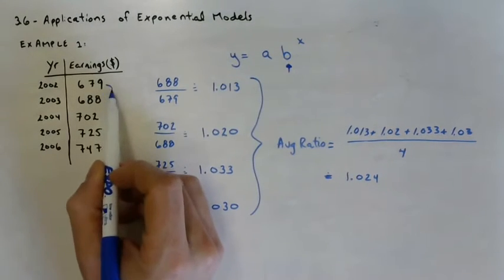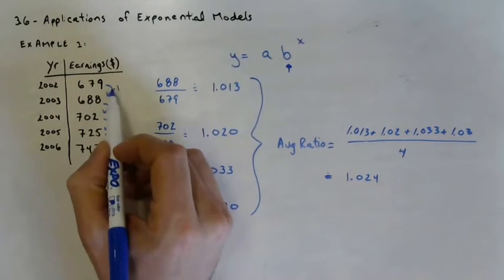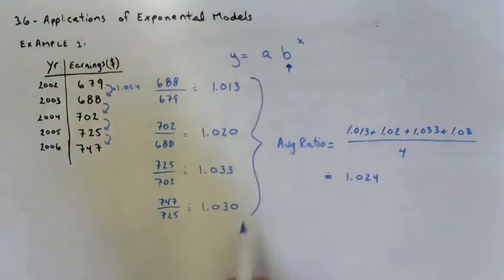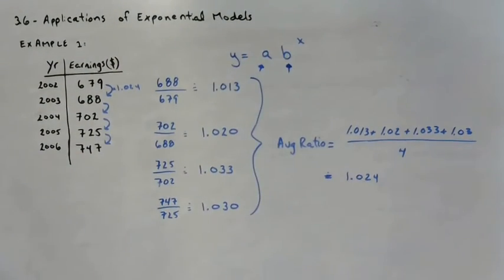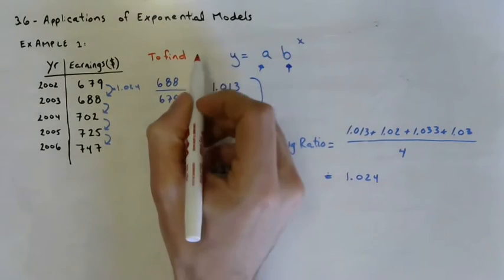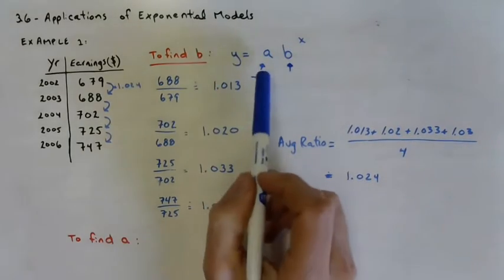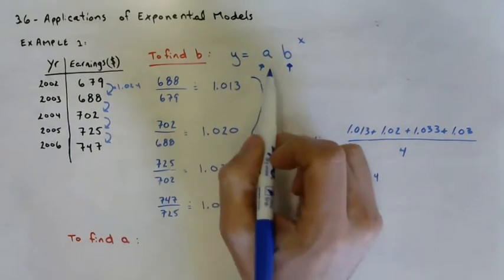That makes this a good approximation to use for our base, our growth factor. That means from year to year, on average, you're multiplying by 1.024 in order to get the next term. So that's going to be our repeated factor. Now, the only other piece that we're missing is A. So maybe I'll make a little note here. This was to find B. And now to find A. What is A? Like in this equation, what has A always stood for?